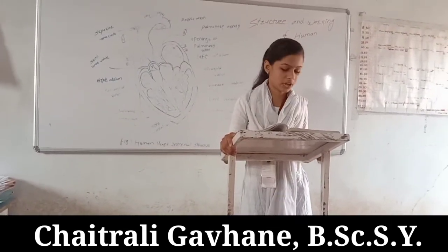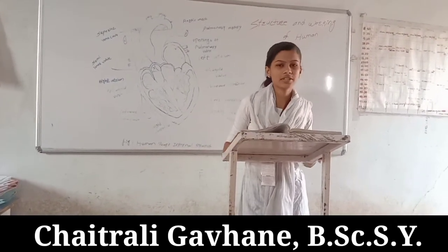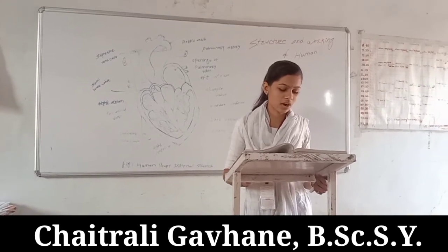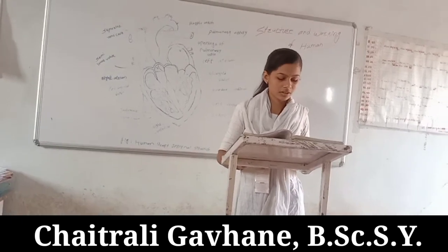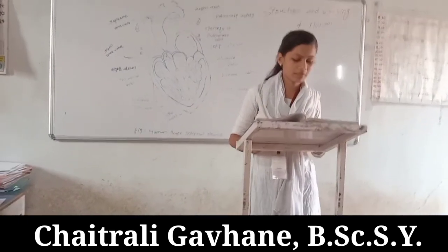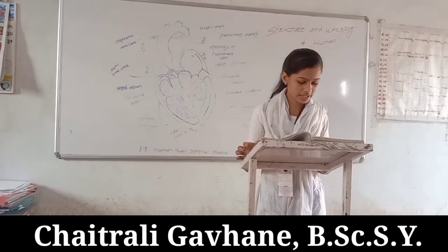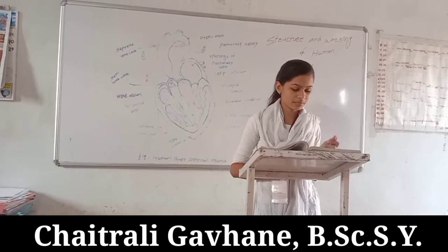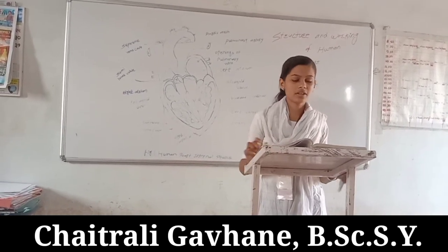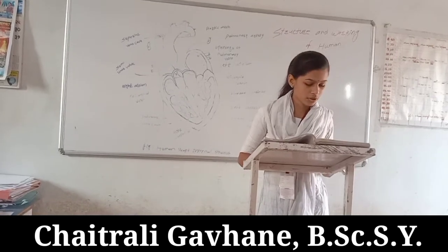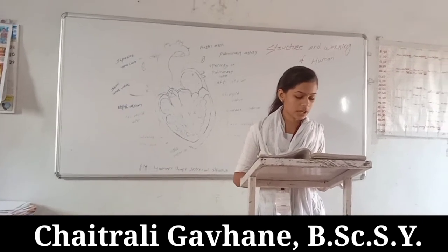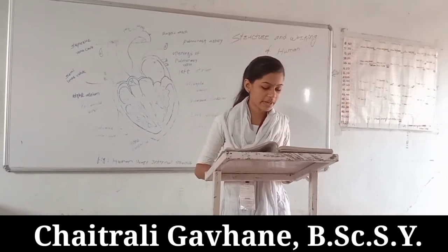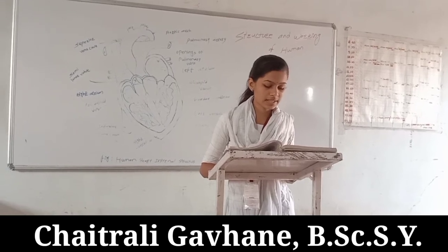The structure and working of the human heart: The heart is situated almost in the middle of the thoracic cavity in a space called the mediastinum, between the two lungs. The heart is a hollow muscular conical organ about the size of one's fist, with a broad base and narrow apex tilted towards the left.